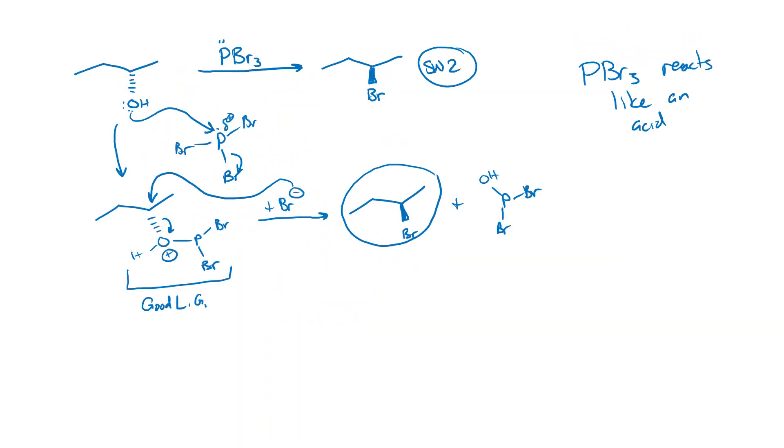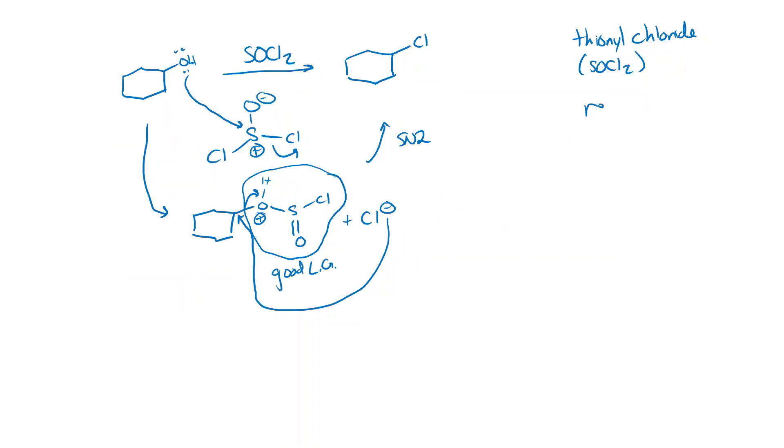So thionyl chloride, PBr3, both of these react like acids to activate alcohols. They allow us to do SN2 reactions and replace OH with Cl in the case of thionyl chloride, Br in the case of PBr3. This is a general strategy. Alcohol plus acid gives us a good leaving group and then we do an SN2 reaction. So we'll see one more example of that, maybe a couple more and that'll finish it up for alcohols.